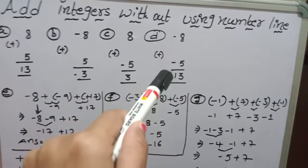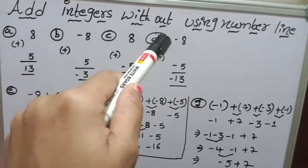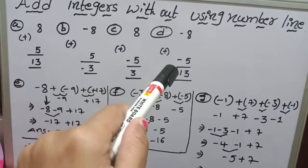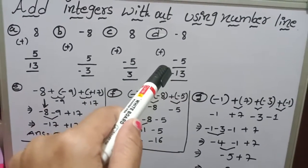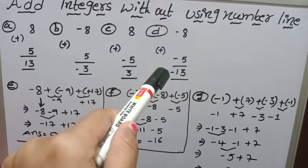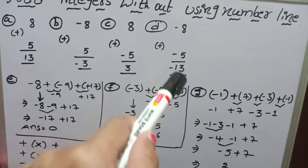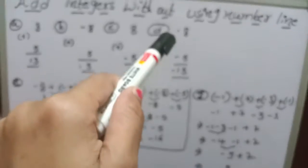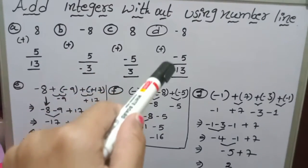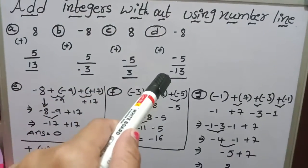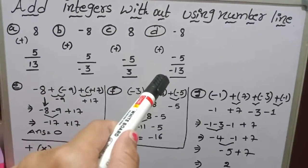If both are negative symbols — for example, minus 8 minus 5 — in this case also do addition. 8 plus 5 becomes 13. Both are negative, so give the symbol as negative.